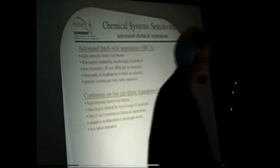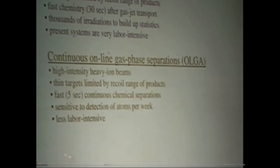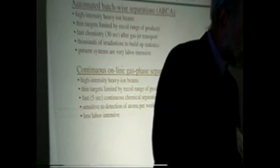A few words about that. Again, the top few are the same. It's faster. We get the chemistry time down to about five seconds. It's sensitive to detection of about atoms per week, much less labor-intensive than any of the other techniques that we've done, although we still do have to work to do it. And really, it gives sensitivities down to the 10-picobarn scale for a certain range of half lives. So that's kind of the way the developments for the chemical separations have gone.